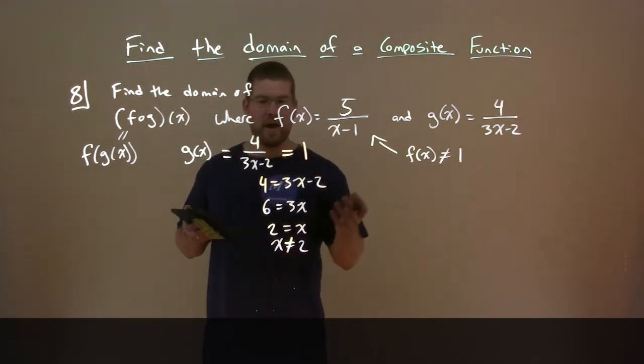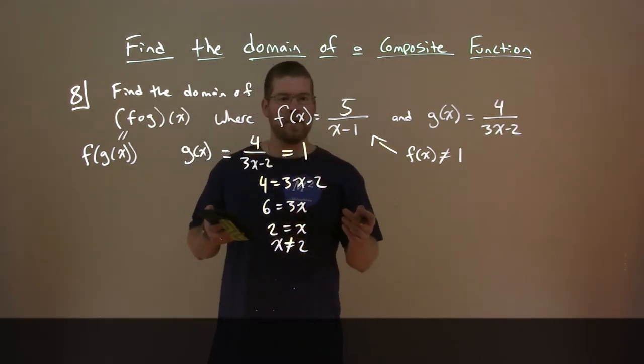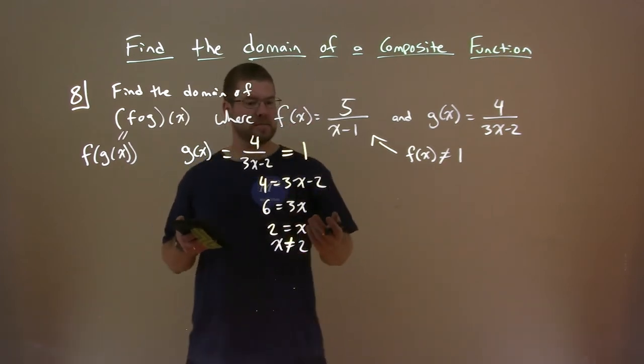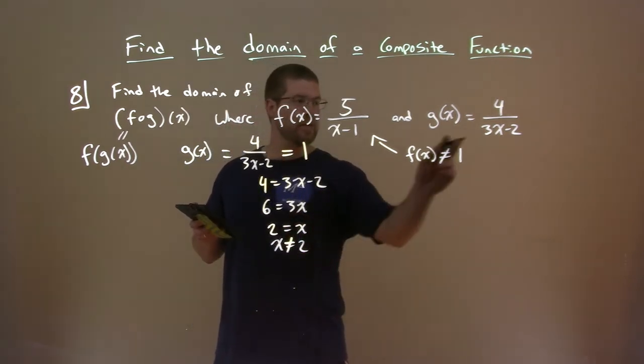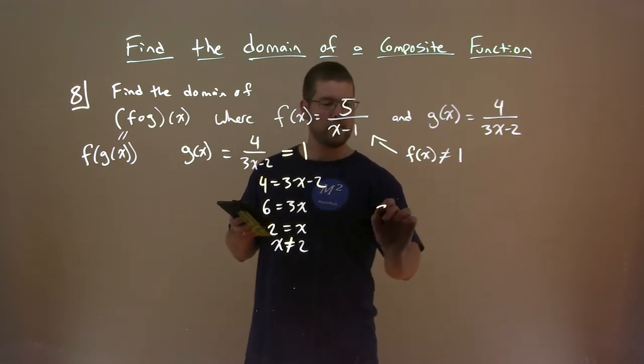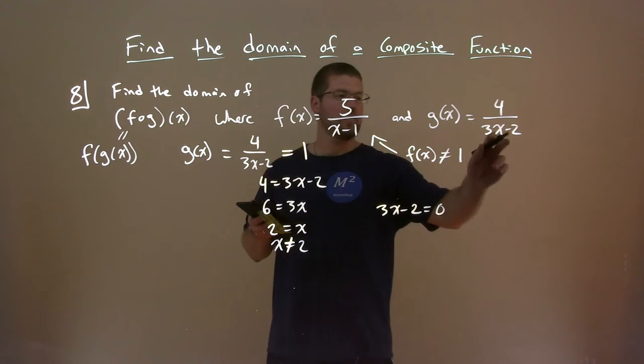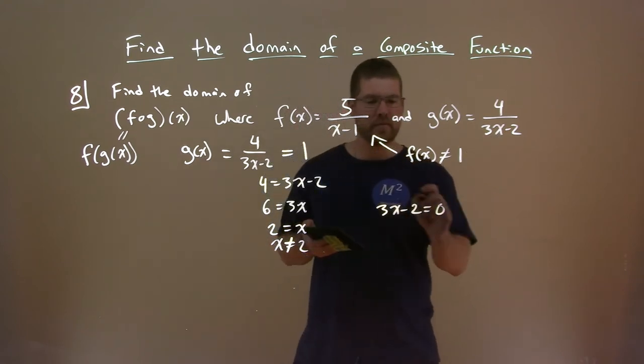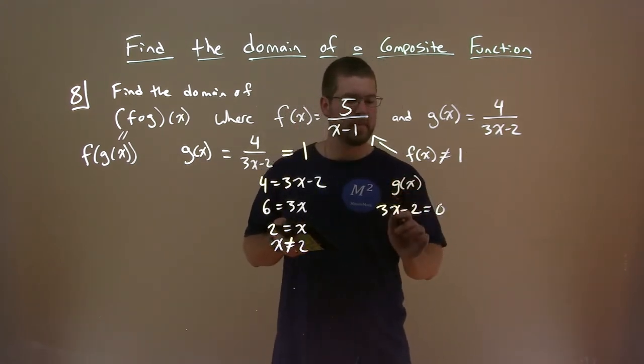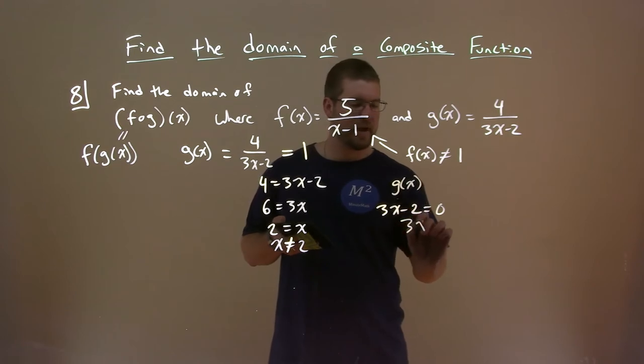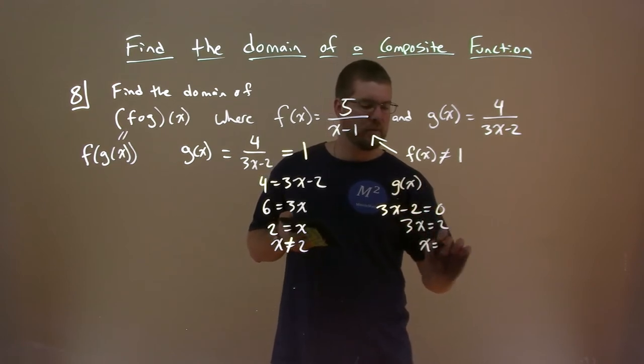Okay, but what about g of x? What other value can we not plug in for g of x? Well g of x has the denominator, right, we take the 3x minus 2, and we're going to set that equal to 0 because we can't have a denominator that equals 0 there. So this is for g of x. So we add 2 to both sides, 3x equals 2, and x equals 2 thirds.